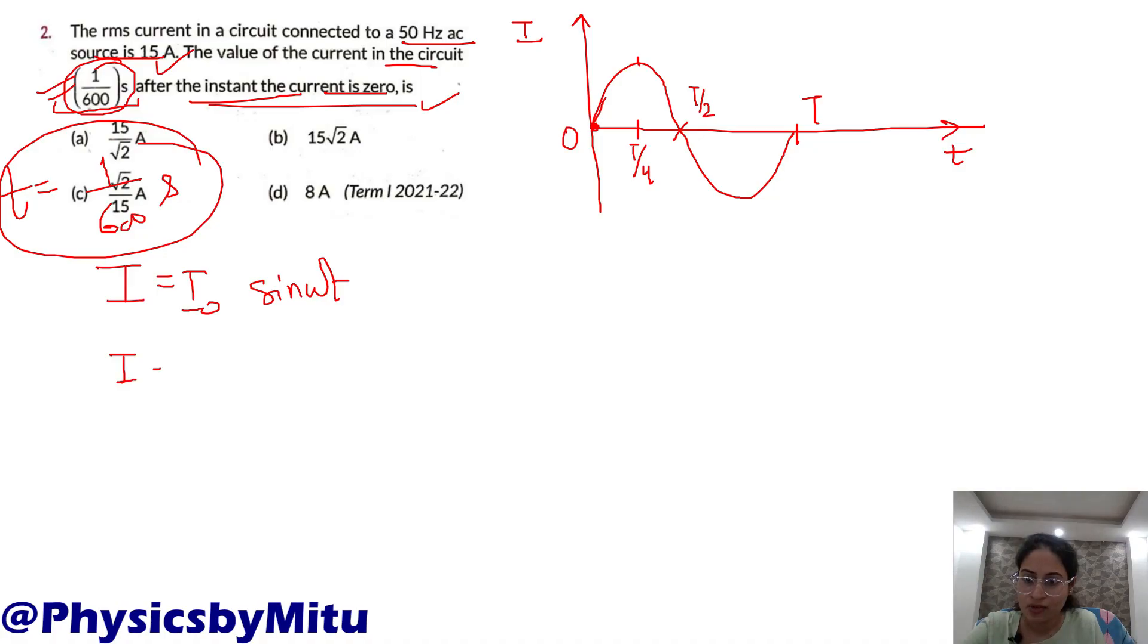So I equals I naught sine omega t. What is omega? 2 pi f. I have to find instantaneous value.